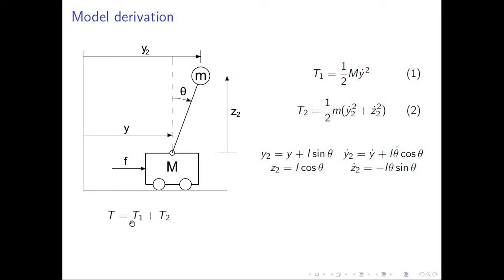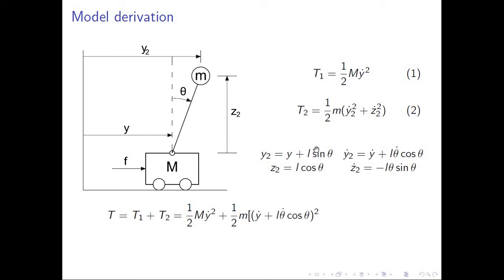The total kinetic energy is composed of the kinetic energy of the cart plus the kinetic energy of the pendulum. That equals the cart's horizontal kinetic energy plus one half of the mass times the expressions for Y2-dot squared and C2-dot squared, after substituting the constrained velocity relations. We now have the total kinetic energy of the system.